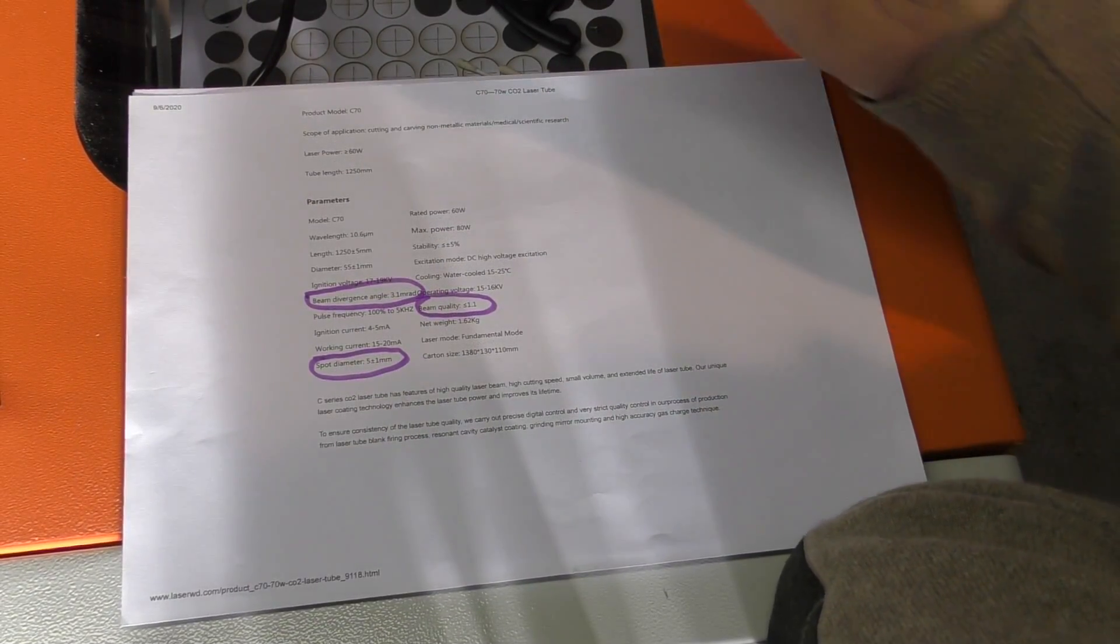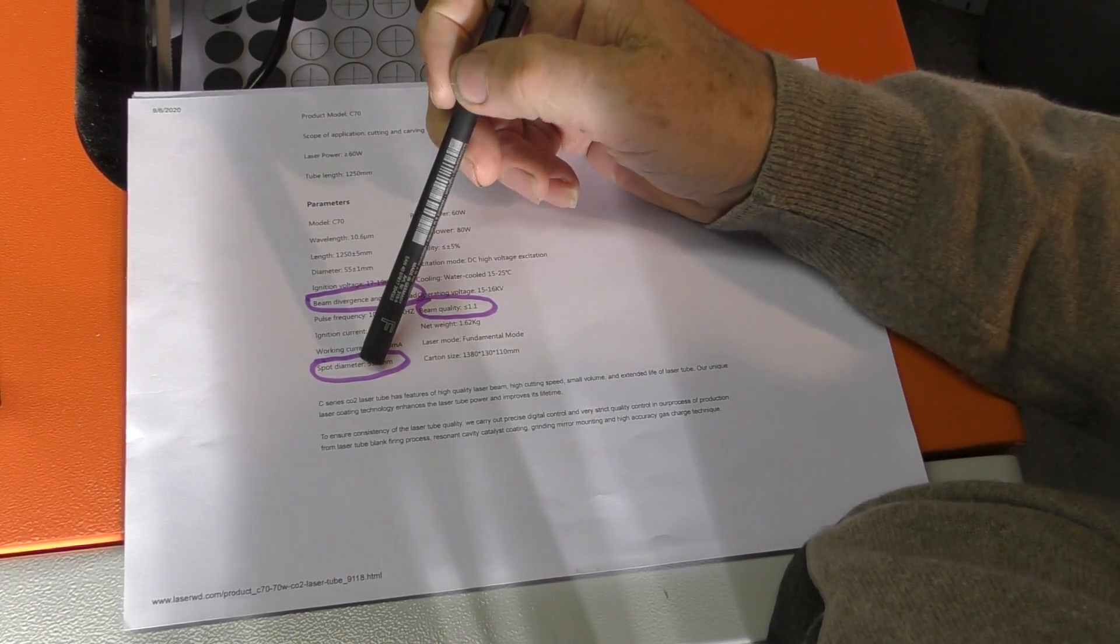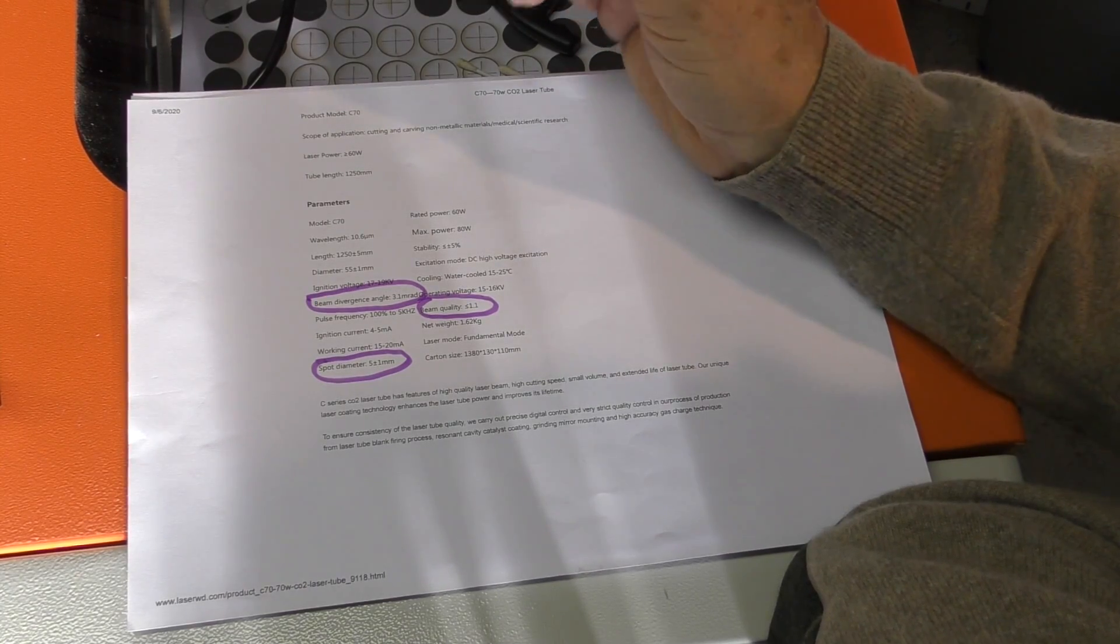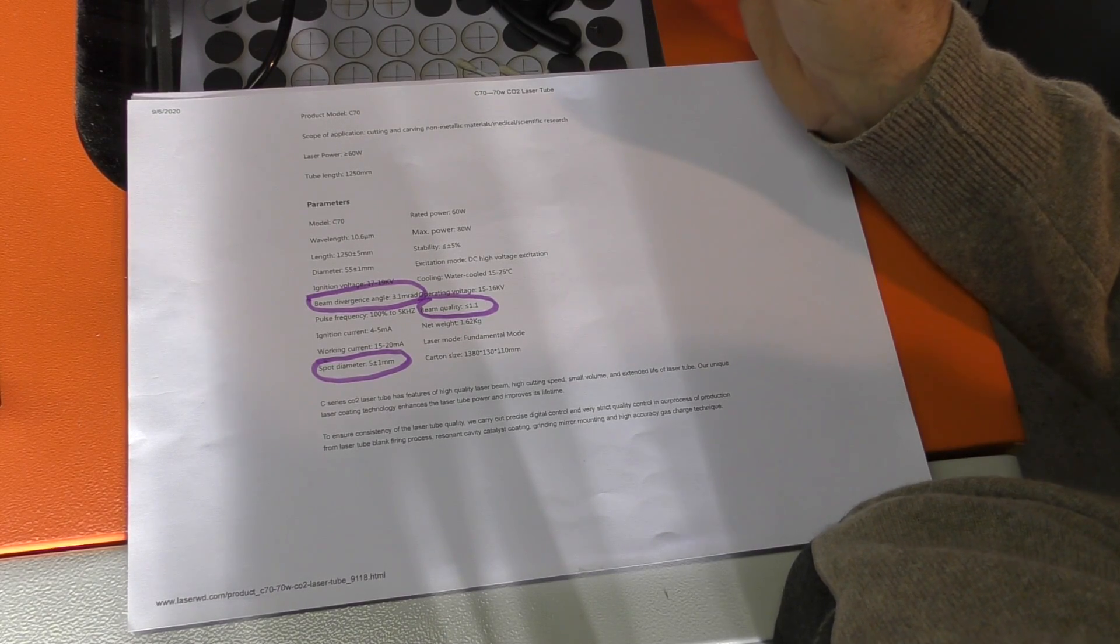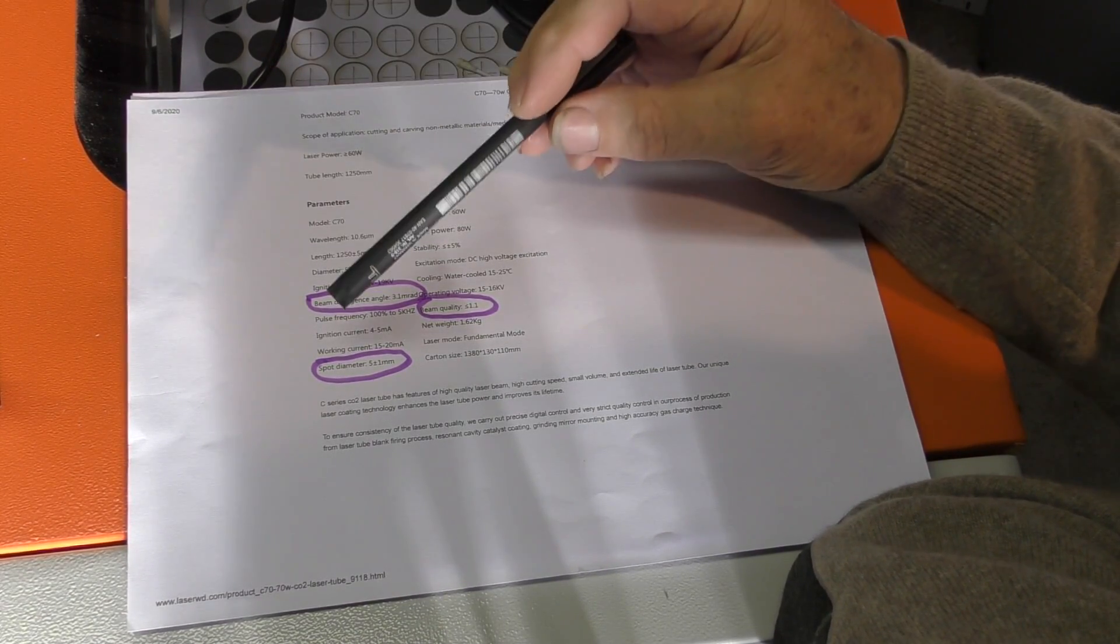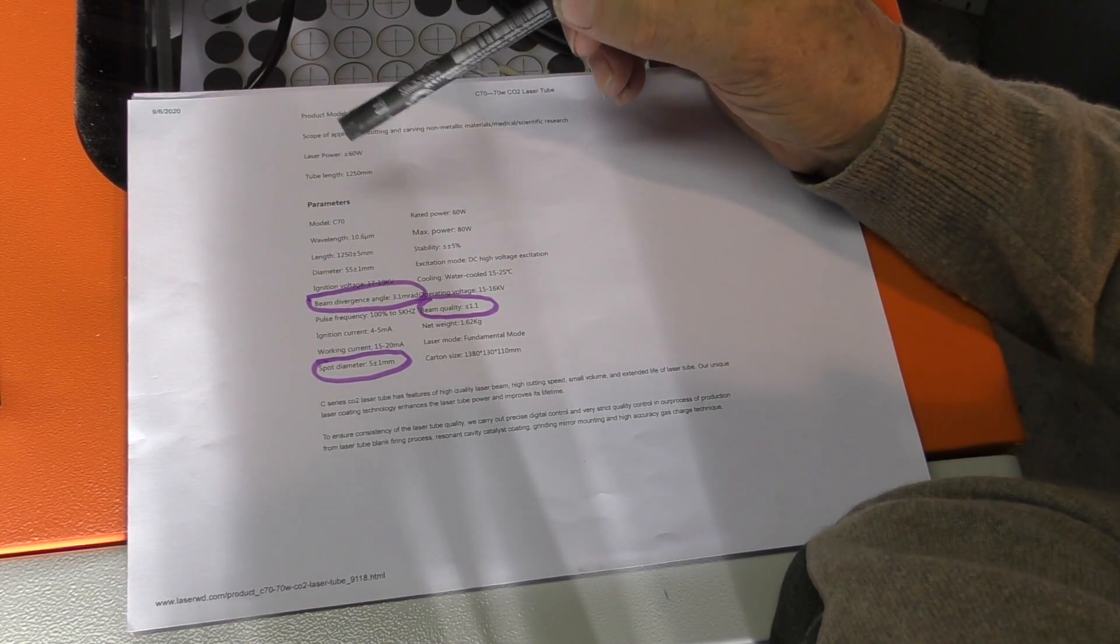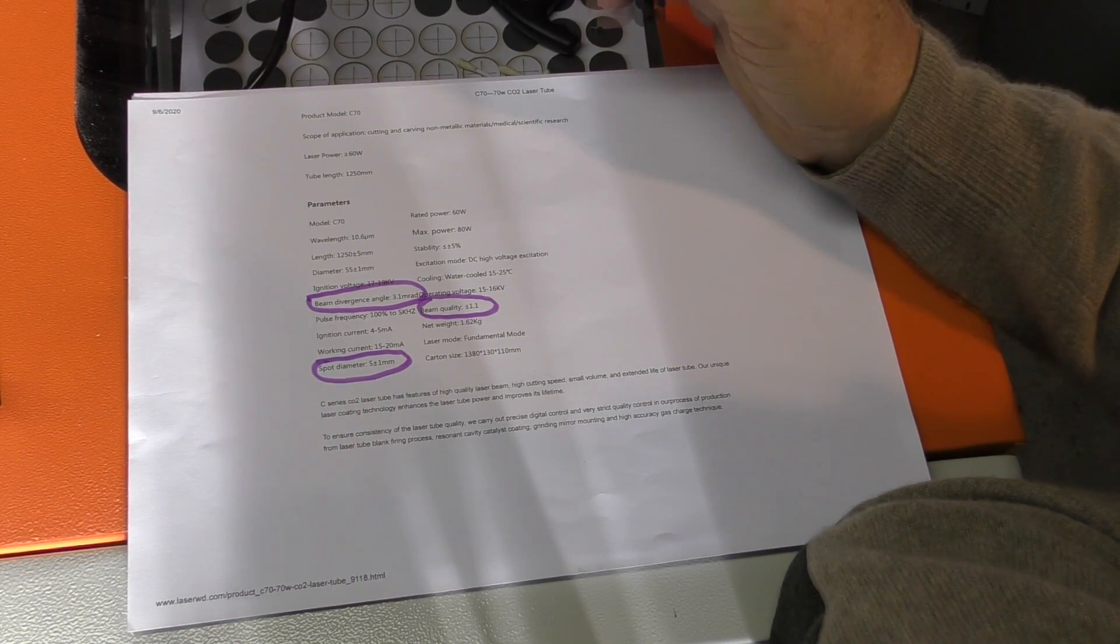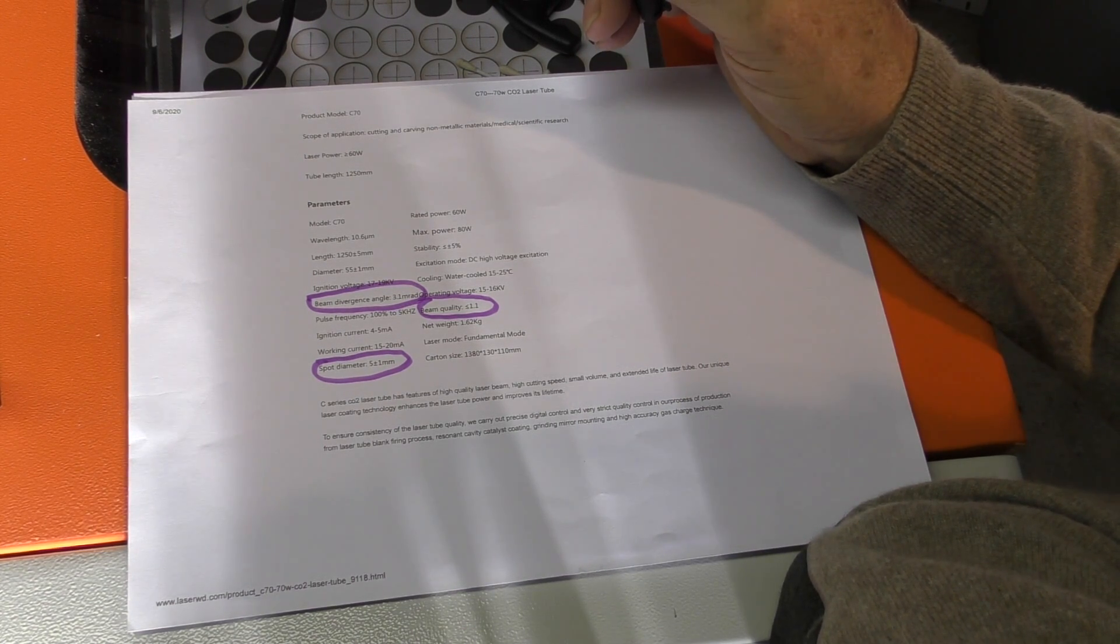When the beam exits from the tube, it has a certain diameter. In this case, it's five millimeters for this C70 model tube that I've got on that laser machine over there. It's just an ordinary glass tube SPT model C70. With this specification, the beam divergence angle is specified here as 3.1 milliradians.